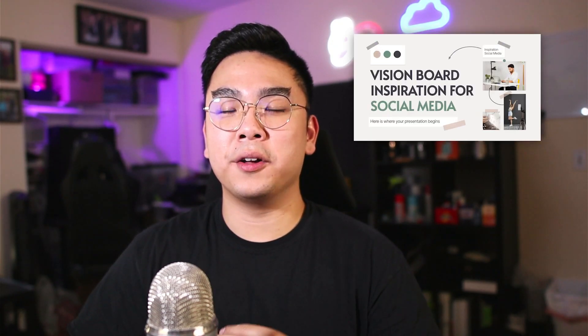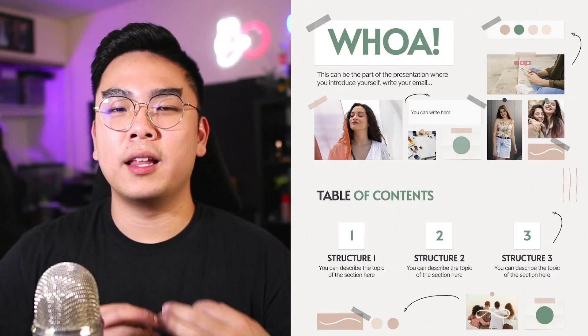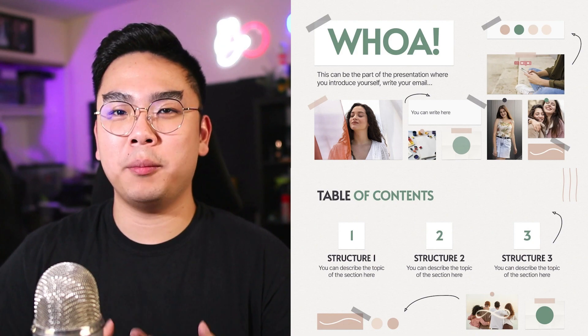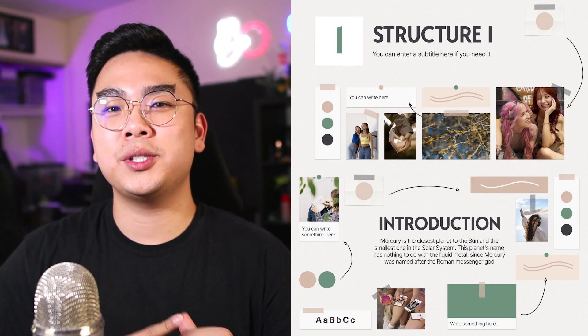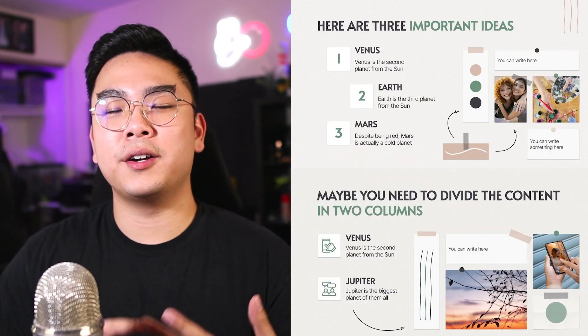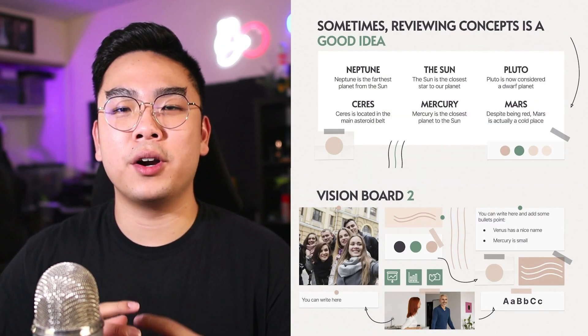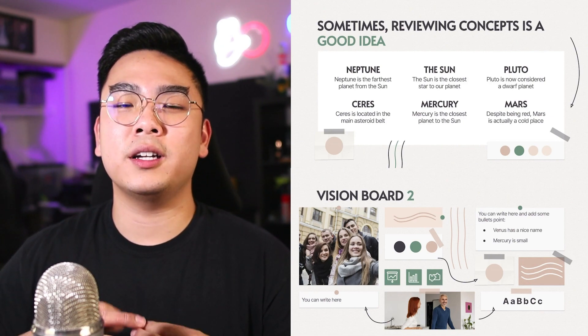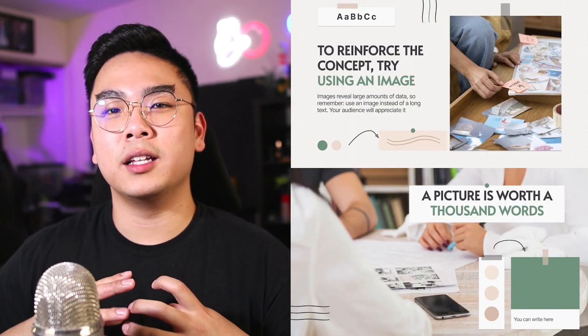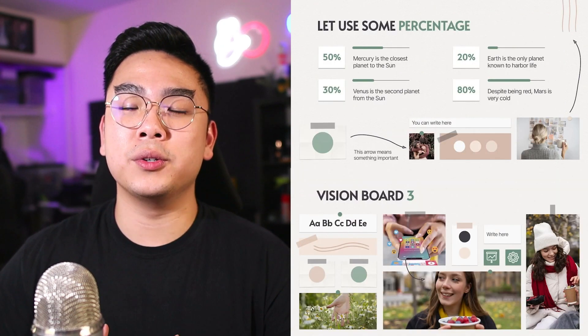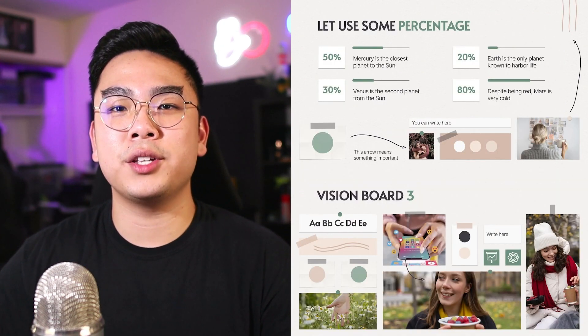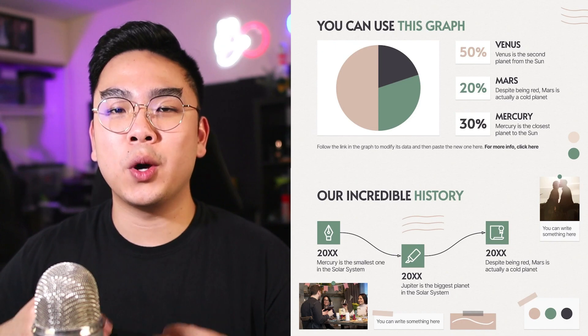Last but not least is the Vision Board for Social Media template. It really reminds me of a social media platform with image posts, status messages, different colors, arrows, and accent lines that guide your audience's focus to a certain part of the presentation. It's very modern and clean with a sans-serif font. The text is easy to read and you can attach a lot of photos and text — definitely a plus if you want to include a lot of information without making it look crammed. Those are all the Google Slides templates I found very clean. Now I want to show you how to implement and use them yourself.